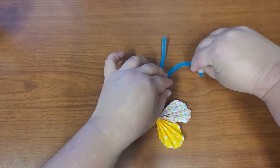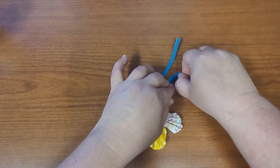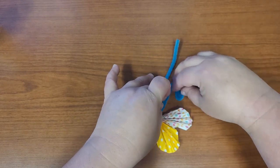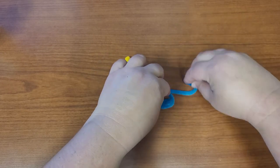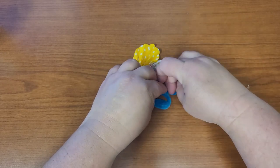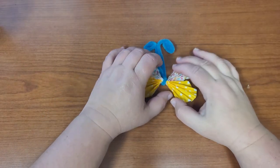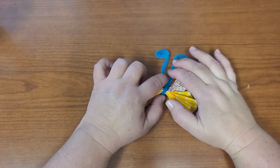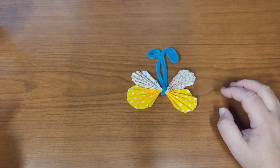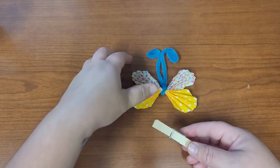All right and then you can shape the antenna. You can cut it down if you want to be shorter or you can kind of twist it around. Okay, so you've added the butterfly's antenna and now we're going to do our final step.